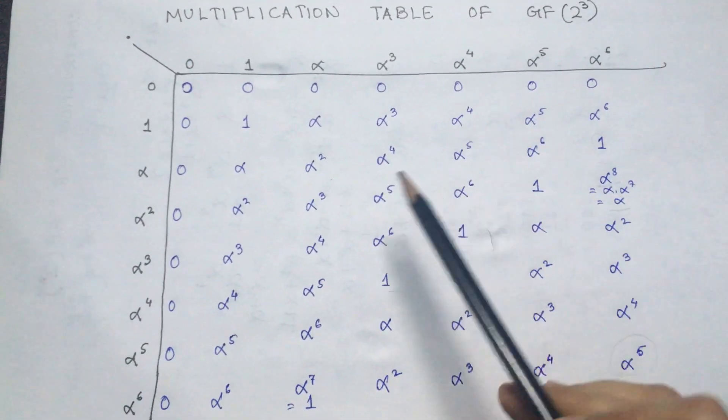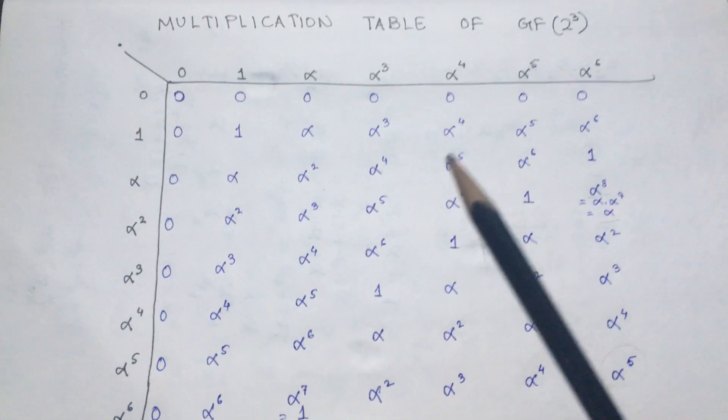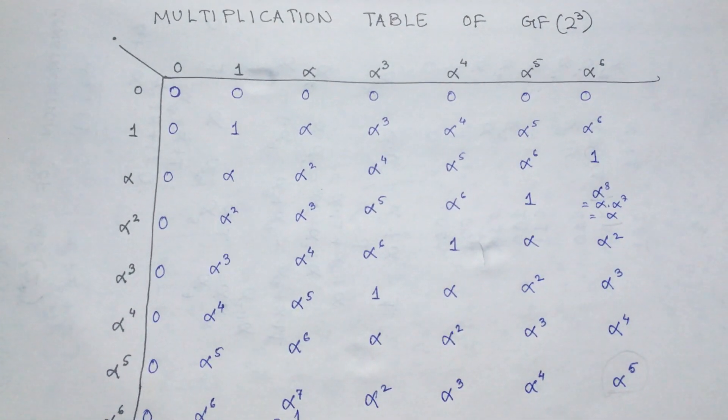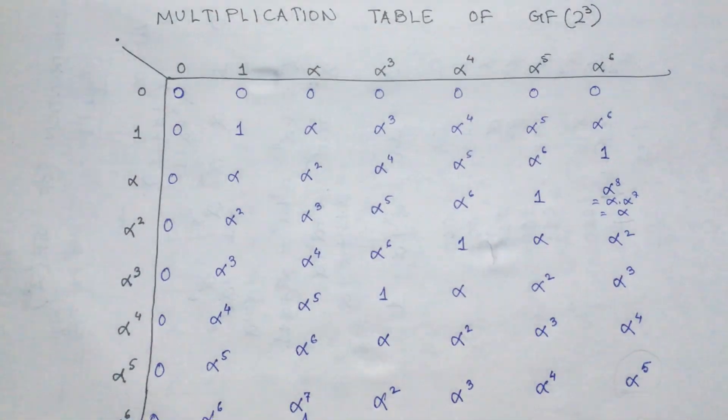And once again we can see that all the elements that we obtained in this table, they belong to the GF 2 to the power 3. So this GF 2 to the power 3 is closed with respect to the multiplication operation also.